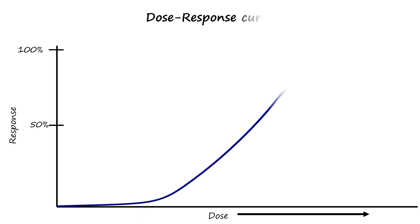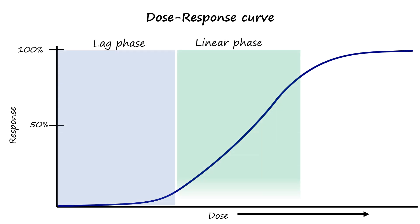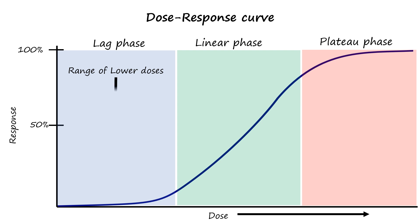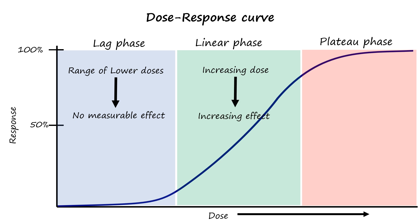The sigmoidal shape of the dose-response curve reflects three distinct phases: the initial lag phase, a steep linear phase, and a plateau phase. The lag phase represents the initial part of the curve where, at very low doses, no significant effect is observed because the drug concentration is insufficient to interact significantly with its targets. As the dose increases, the response also increases in a linear fashion during the linear phase because more drug molecules are available to interact with their targets. Finally, at higher doses, the response plateaus as all of the available receptors become occupied by the drug.